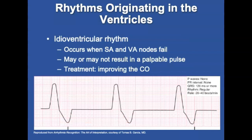The idioventricular rhythm occurs when the SA and AV nodes fail and the ventricles must pace the heart. It is usually regular with little variation between R-on-R intervals, with no P wave and no PRI interval. The rate is 20 to 40 beats with little variation. An agonal rhythm pattern is created when the ventricular rate slows to less than 20 beats; it may or may not result in a palpable pulse. Treatment focuses on improving cardiac output by increasing the rate and, if possible, treating the underlying cause.